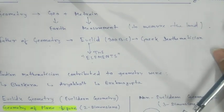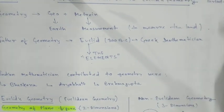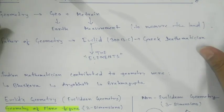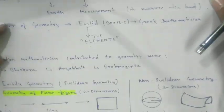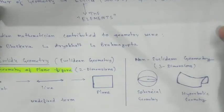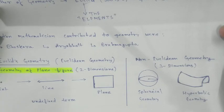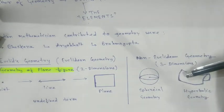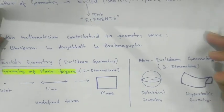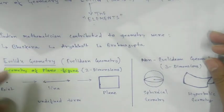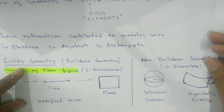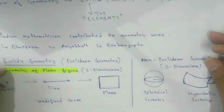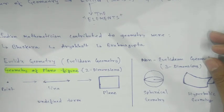One is Euclidean geometry, one is spherical geometry, and another is hyperbolic geometry. We will not discuss these two geometries — they are not in our syllabus. We will discuss only Euclidean geometry, which is the geometry of plane figures. Plane figures means two dimensions.